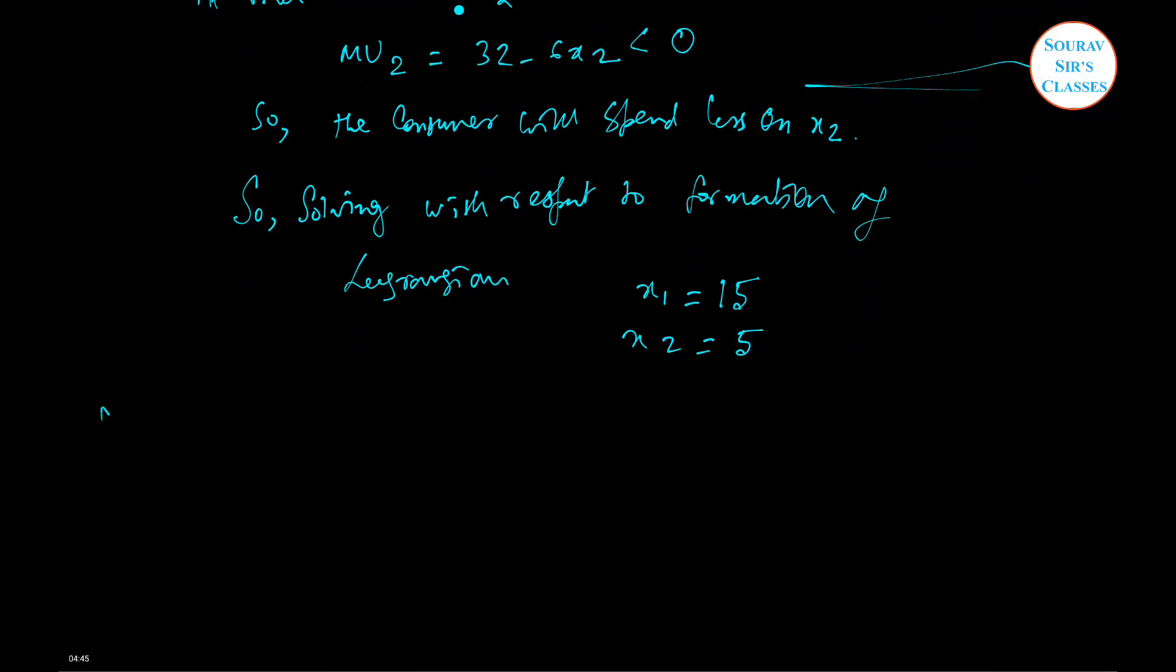If you still didn't get it, there is a small note on the Lagrangian formation. L equal to the budget line, that is 2x1 plus 32x2 minus 3x2 square plus lambda times 20 minus x1 minus x2.